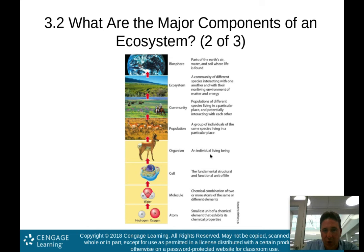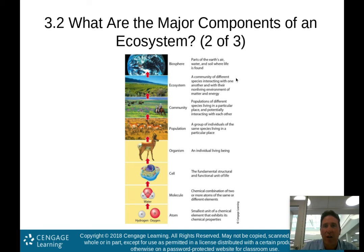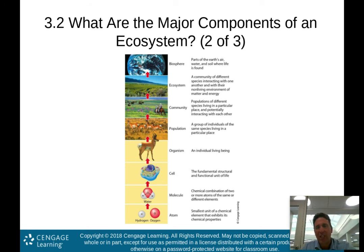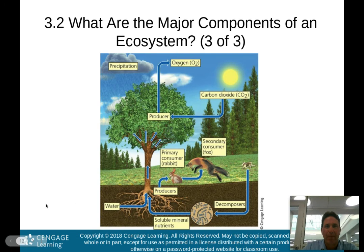An ecosystem is a community of different species interacting with one another, and the biosphere is where all life is found. In this course, we're not going to be looking at the cell, the molecule, and the atom as much. We'll basically be dealing with the first five levels of ecosystem organization.